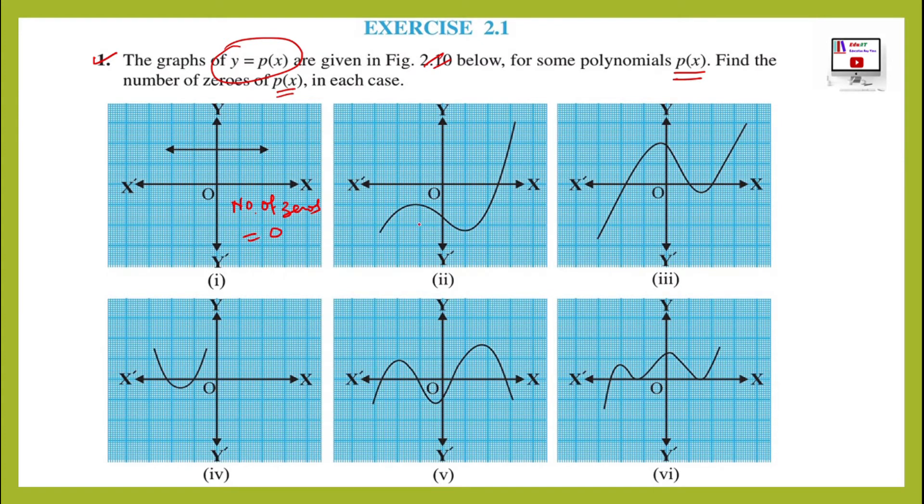For graph 2, number of zeros will be 1 as there is 1 intersecting point. The number of zeros is 1 here, only 1. Why this number of 0 will be 1? Because the graph intersects the x-axis at 1 point only.